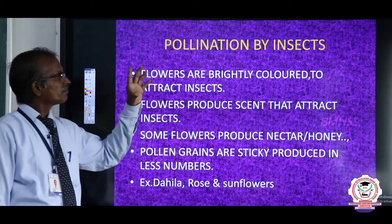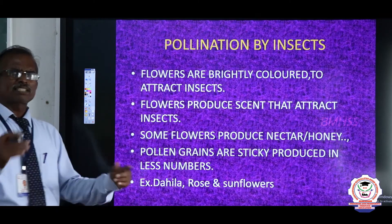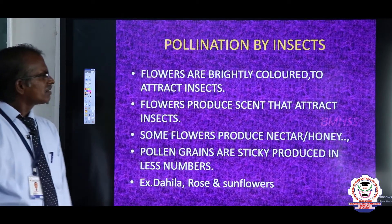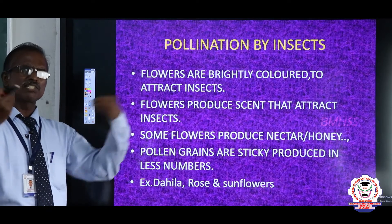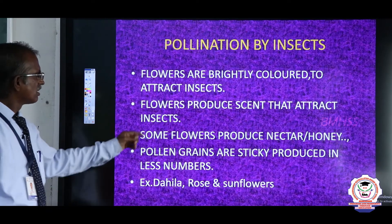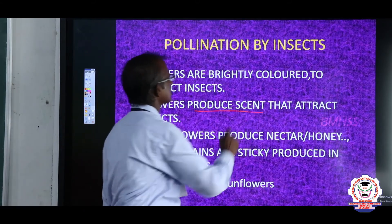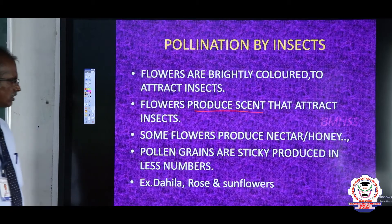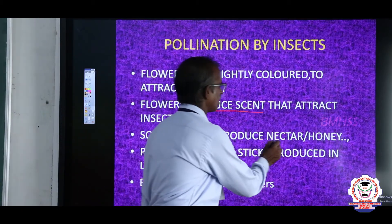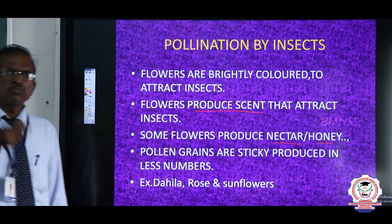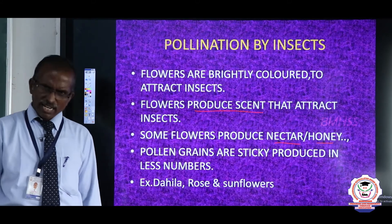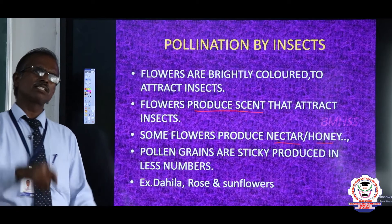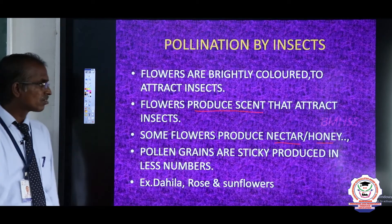In this case, flowers show some characteristic features. Flowers are mostly brightly colored to attract the insects. Flowers produce scent that attracts the insects for pollination. Some flowers produce nectar or honey. This is food for insects, so the insects visit different flowers to carry pollen grain from one flower to another.